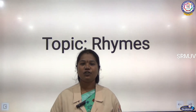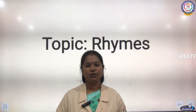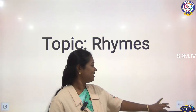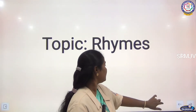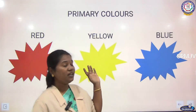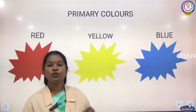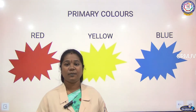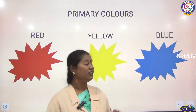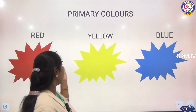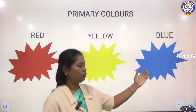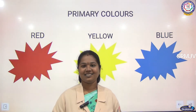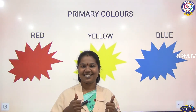Children, today we are going to learn about primary colors. The primary colors are used to create all other colors. The primary colors are red, yellow, and blue. The name of the rhyme is Colors. Shall we start?